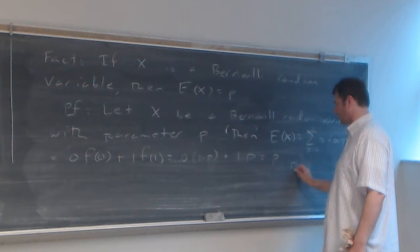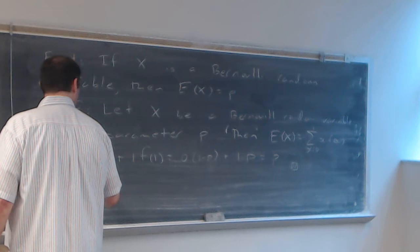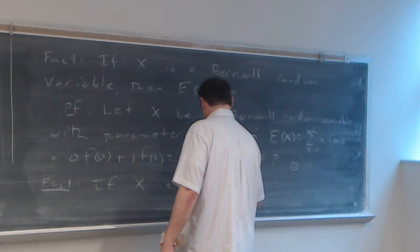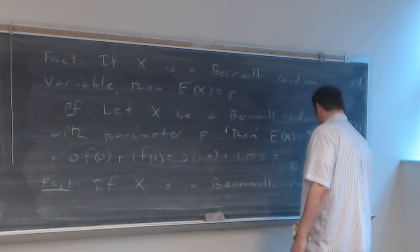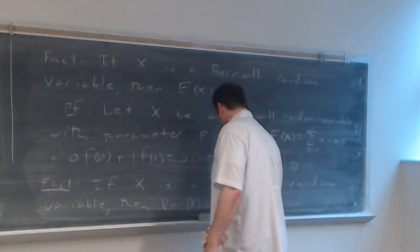That's the proof — very simple. The last fact for a Bernoulli random variable: if x is a Bernoulli random variable, then the variance of x equals p times (1 minus p).